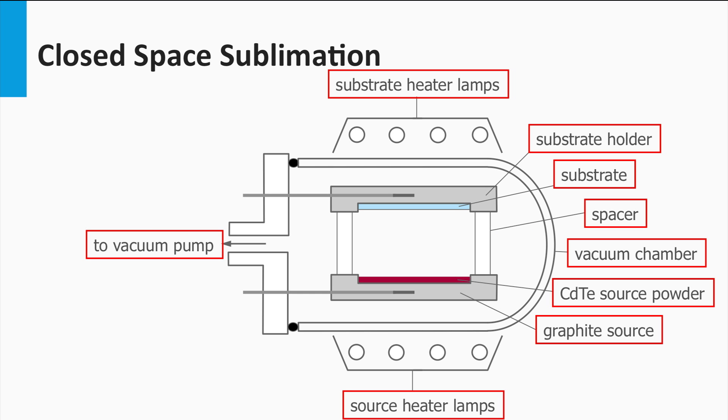The cadmium sulfide-cadmium telluride layers are in general processed using the closed space sublimation method. In a closed space sublimation method the source and the substrate are placed at a short distance from each other, like a few millimeters up to centimeters under vacuum conditions.